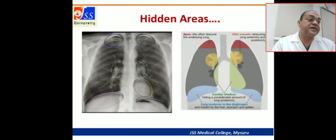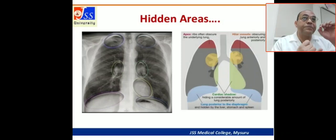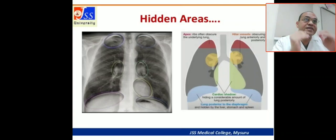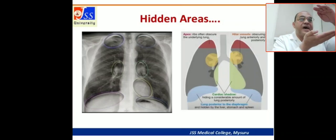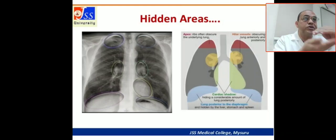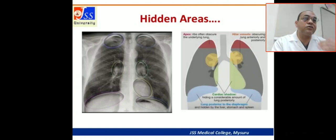As we mentioned, the apical part can be obscured by the clavicle, which hides underlying pathology. You have to look carefully at both the right and left apical parts. Regarding the hilar area, the hilar vessels can obscure the lung anteriorly and posteriorly, so you have to dig for the underlying pathology.